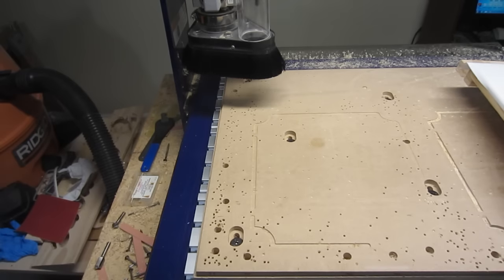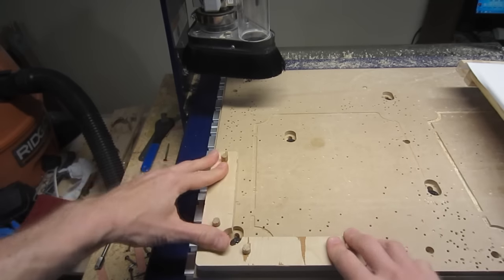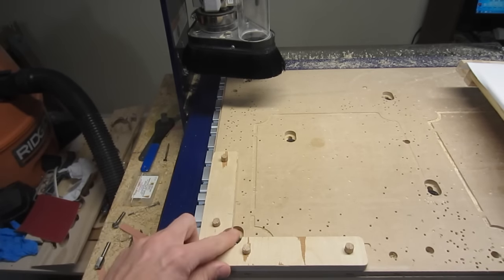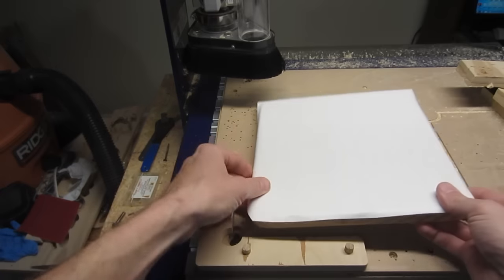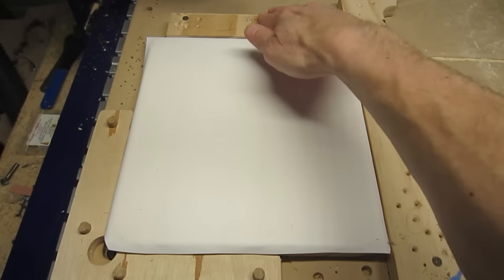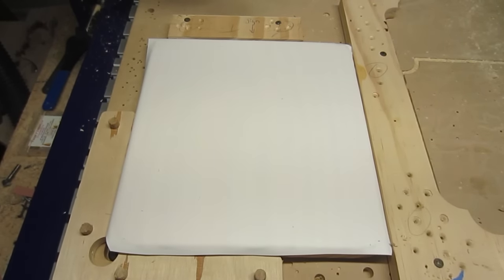To accurately and securely position the sign blank on the router table, I use a right angle jig that offsets the lower left hand corner of the piece to one and a half inches in both x and y directions. Two pieces of scrap wood are then screwed down to the spoil board on the top and right side of the piece to hold it tight against the jig.